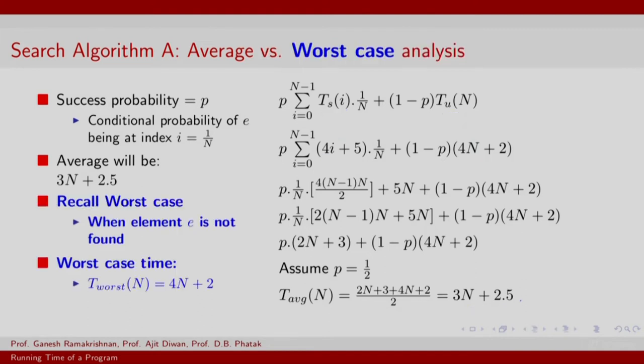How about worst case? Well, worst case is exactly when the element E is not found. You need to scan the entire list and that is something we already computed, this 4n plus 2. So the average is 3n plus 2.5, the worst case is 4n plus 2. The difference is not really very significant with a linear scan.